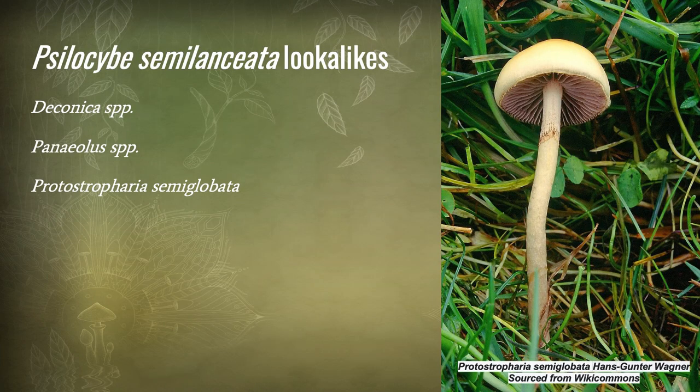In terms of semilanceata lookalikes, there are a few. The most common ones are Deconica species, Panaeolus species, and in particular Protostropharia semiglobata. From a distance they can look similar. This image on the right-hand side is of Protostropharia semiglobata — one of the distinctive differences is that the semiglobata cap is quite rounded.